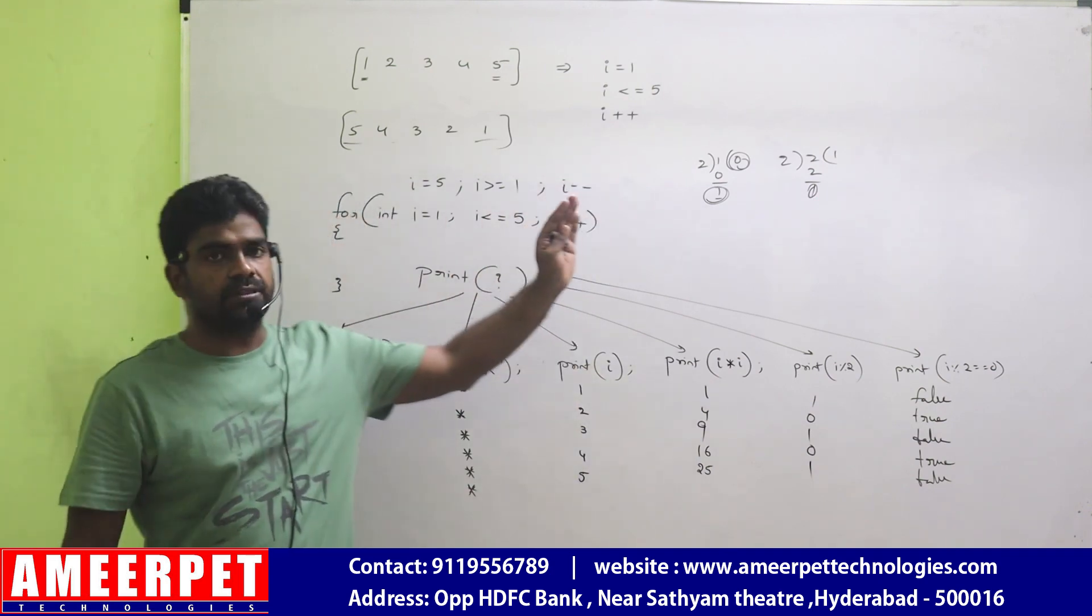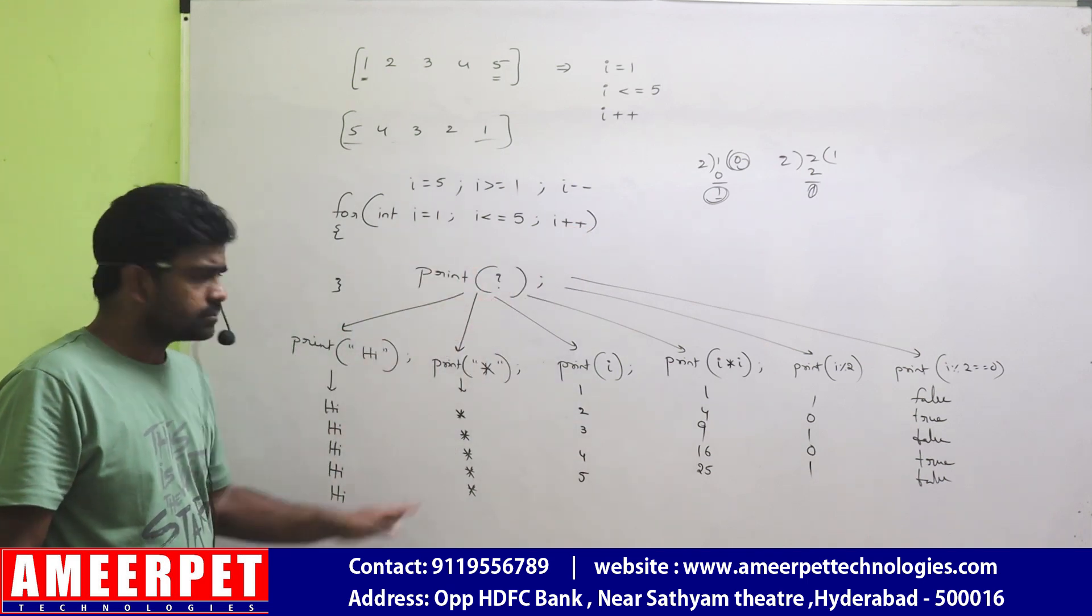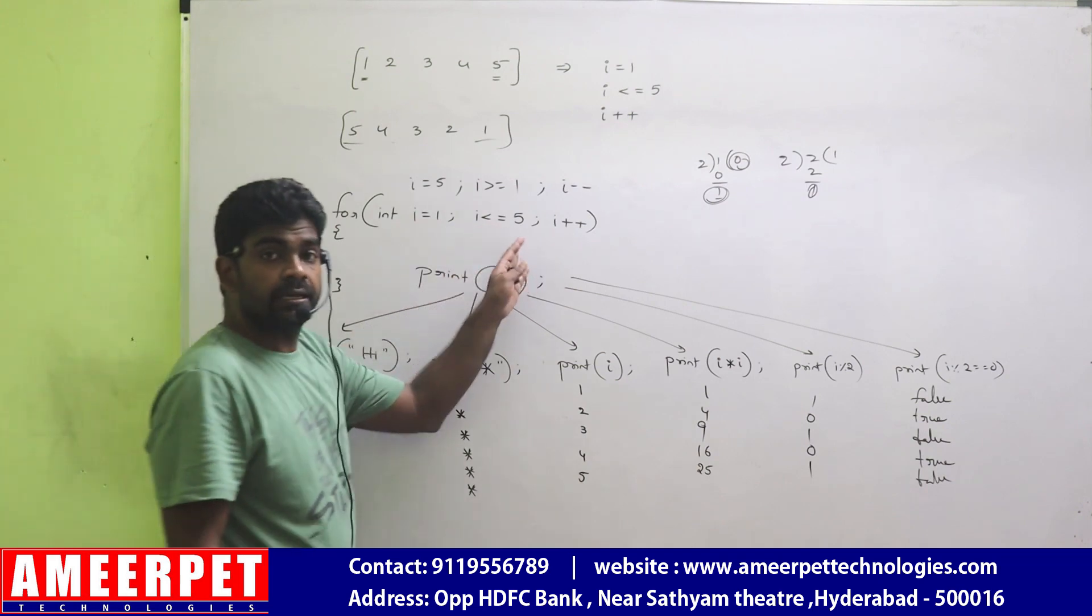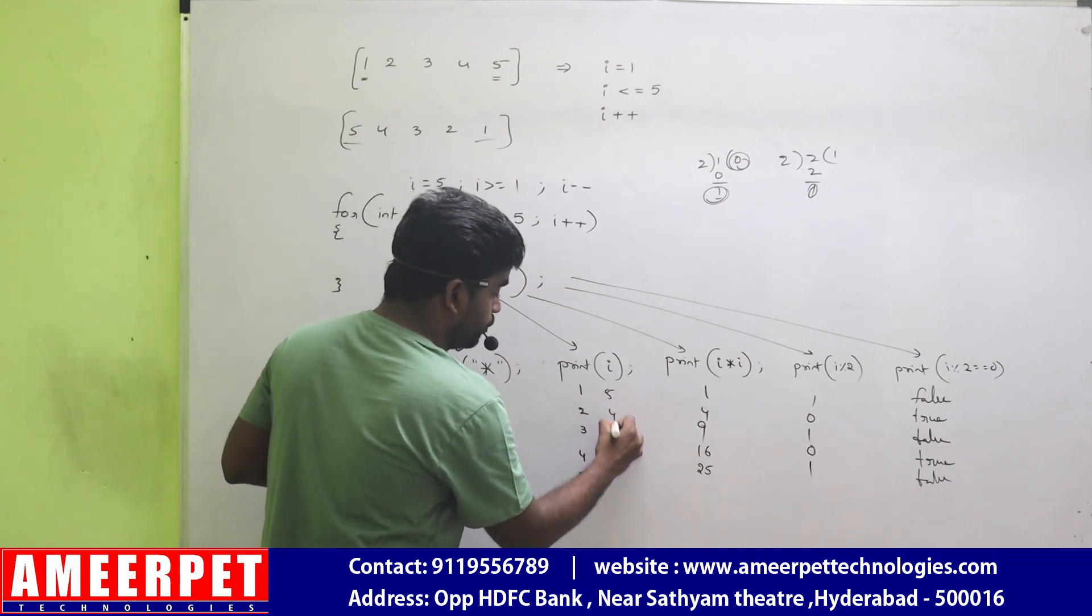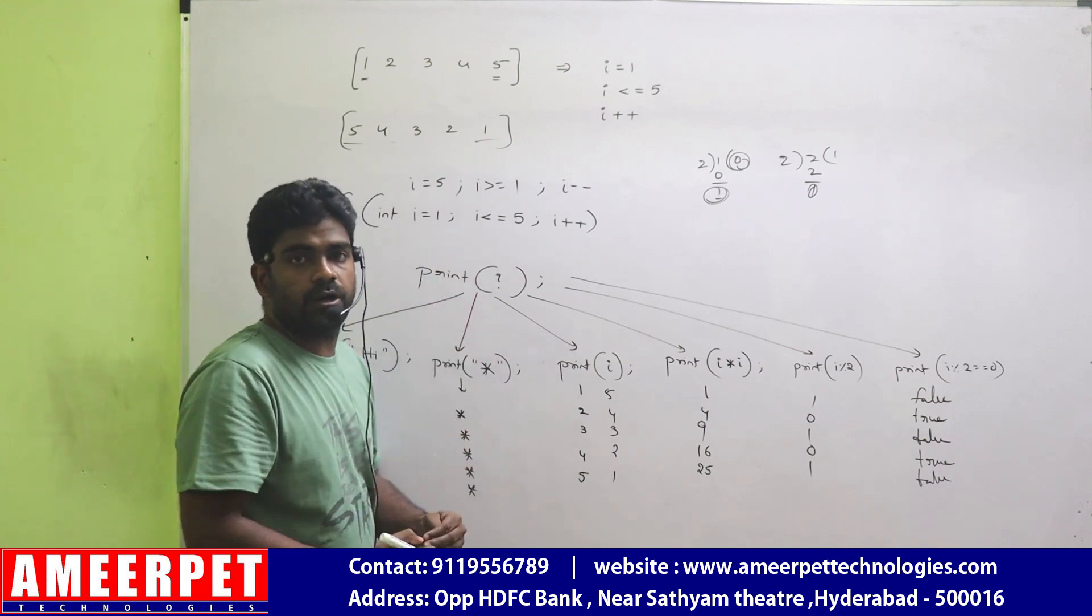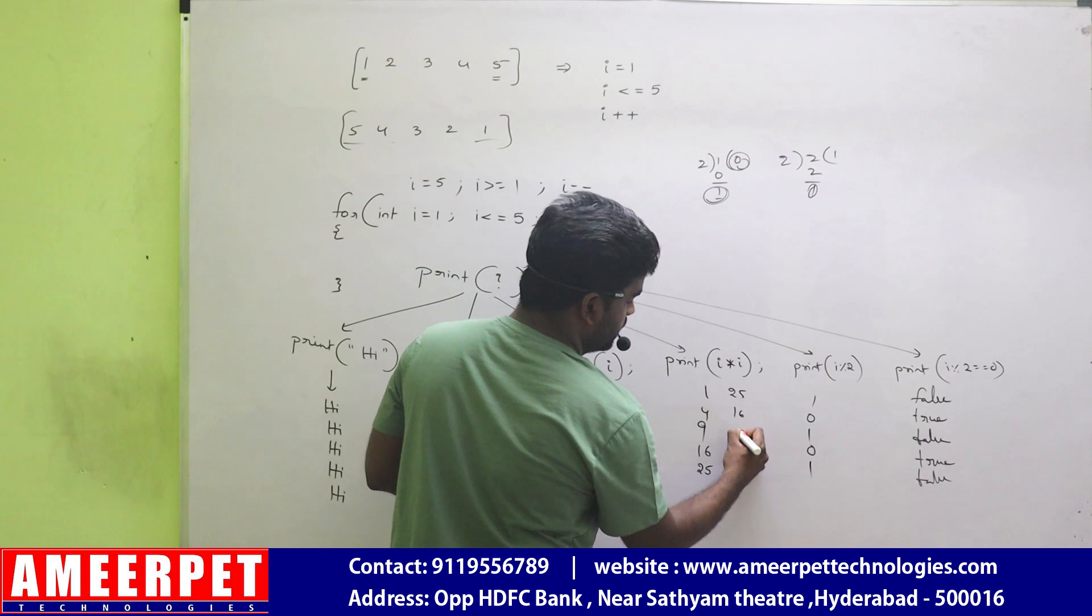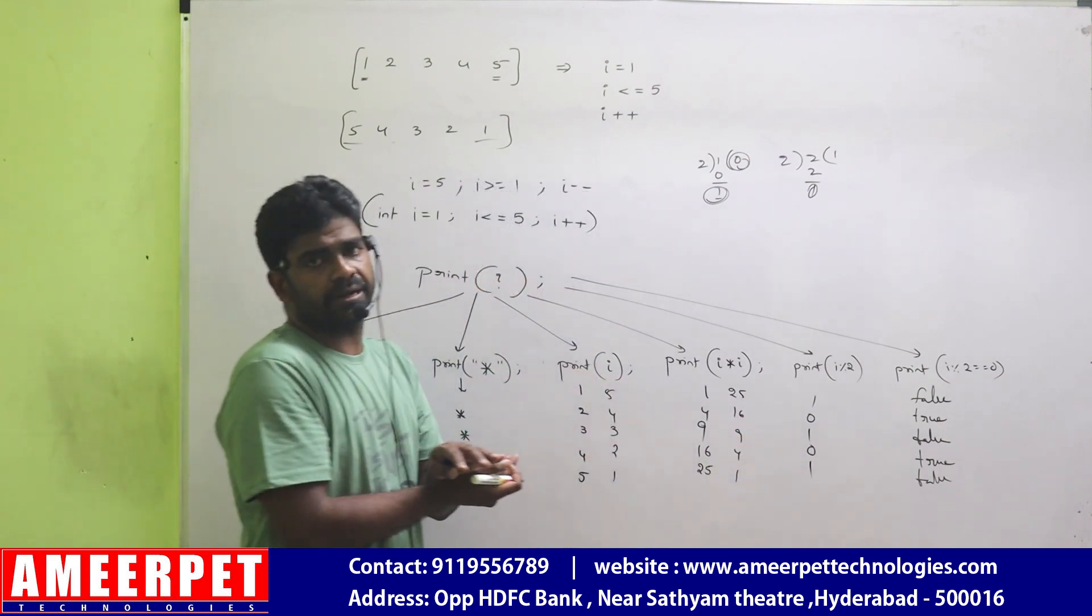So now we are writing inside, same 5 times I, 5 times star. No sir, I am printing here I. So 5, 4, 3, 2, 1. Because it's decreasing order. So whenever I am printing I into I, yes, 25, 16, 9, 4, 1. In reverse it will print everything.